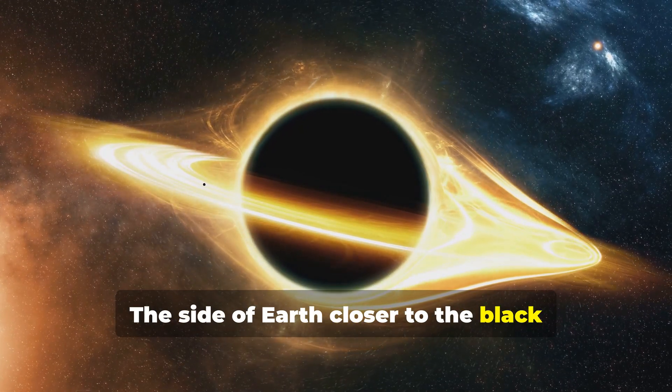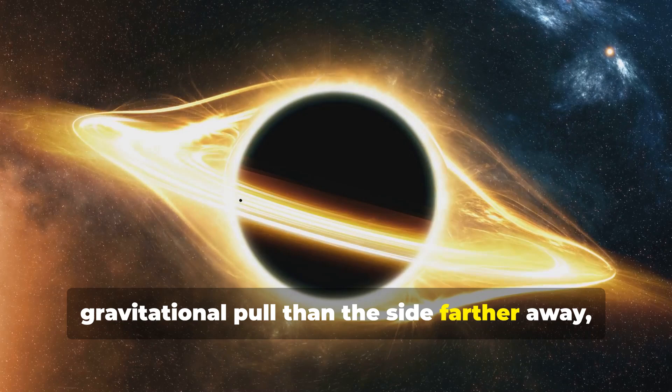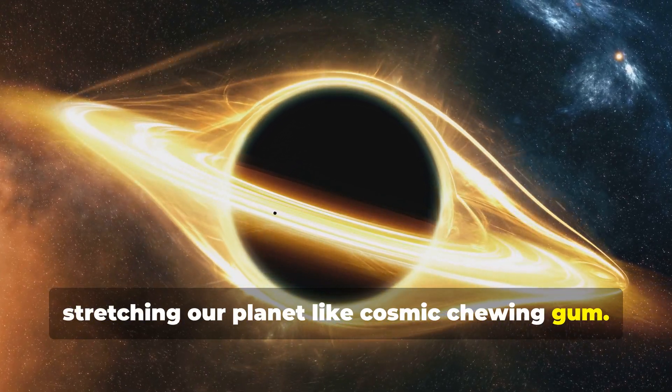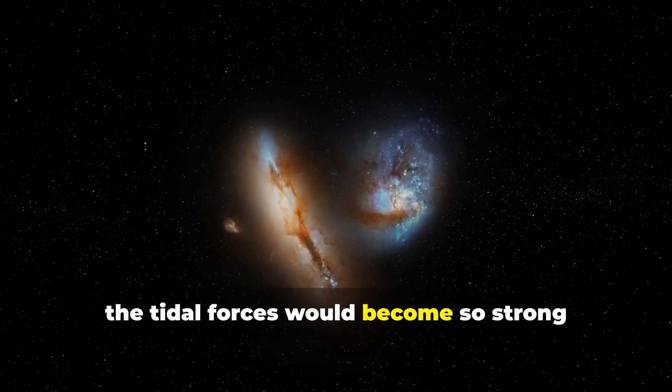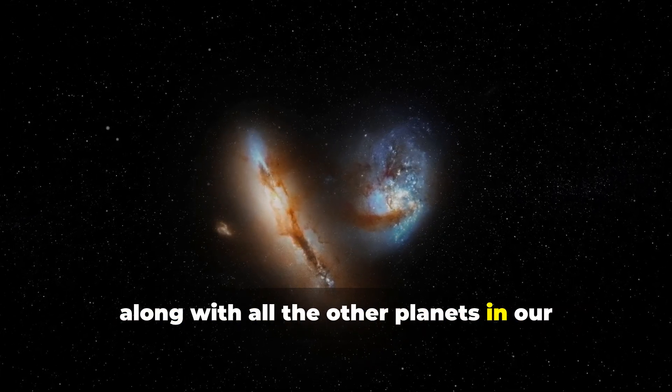The side of Earth closer to the black hole would experience a much stronger gravitational pull than the side farther away, stretching our planet like cosmic chewing gum. Eventually, the tidal forces would become so strong that they would rip Earth apart, along with all the other planets in our solar system.